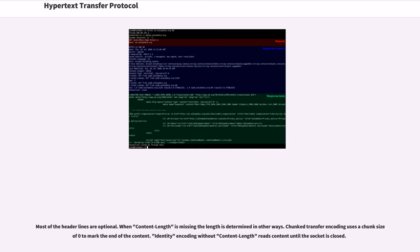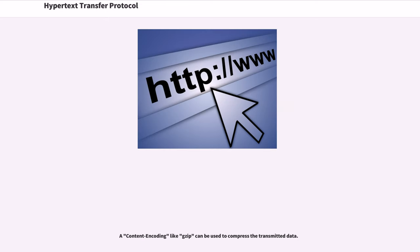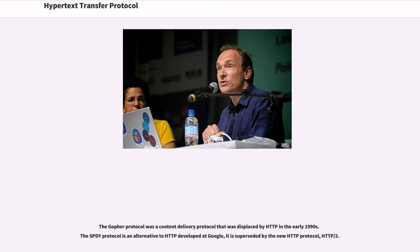Identity encoding without Content-Length reads content until the socket is closed. A content encoding like gzip can be used to compress the transmitted data. The Gopher protocol was a content delivery protocol that was displaced by HTTP in the early 1990s. The SPDY protocol is an alternative to HTTP developed at Google, and is superseded by the new HTTP protocol, HTTP/2.